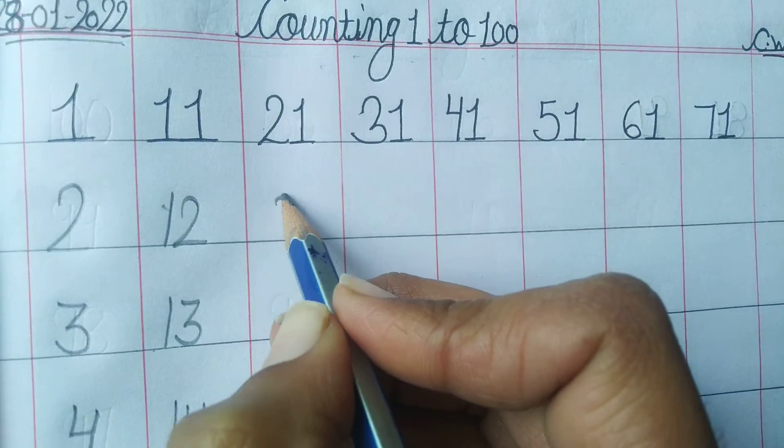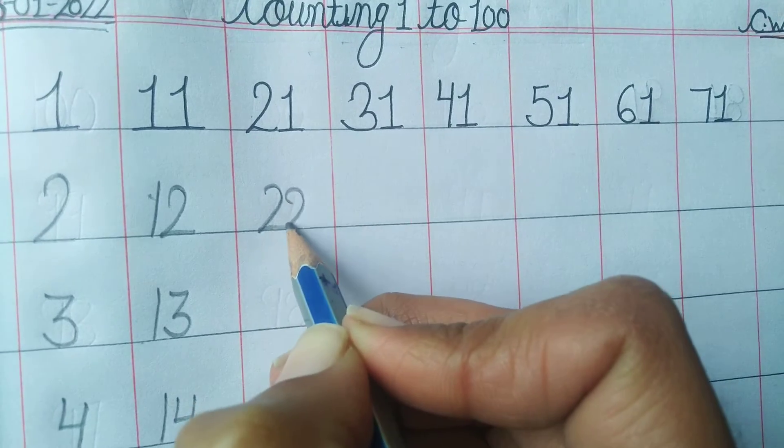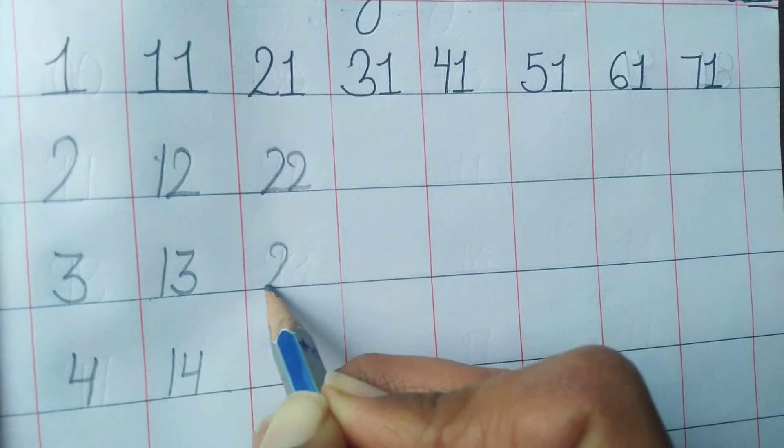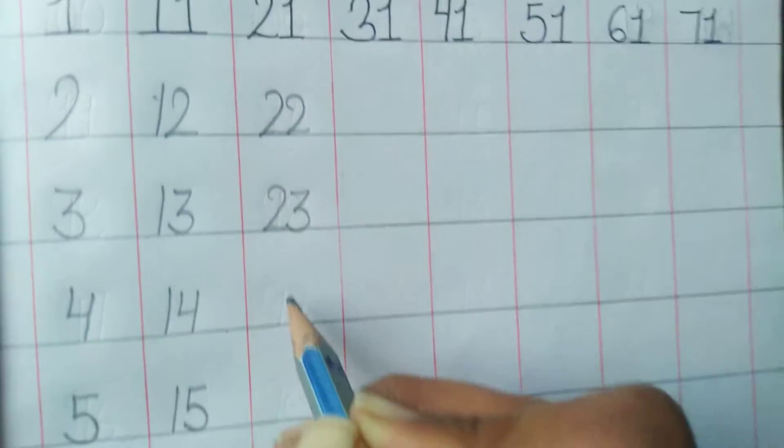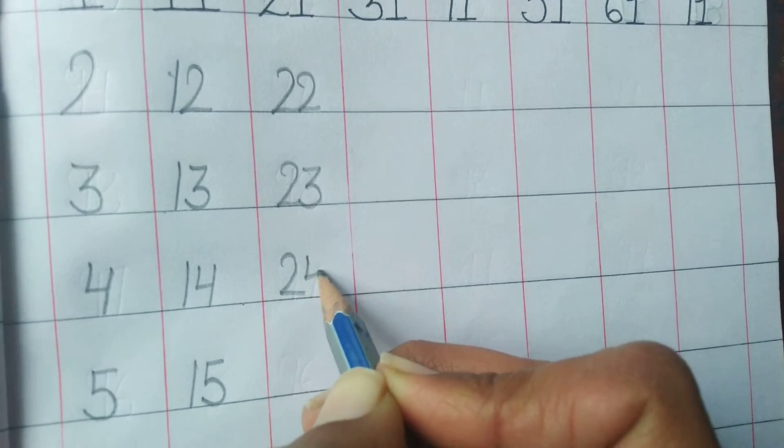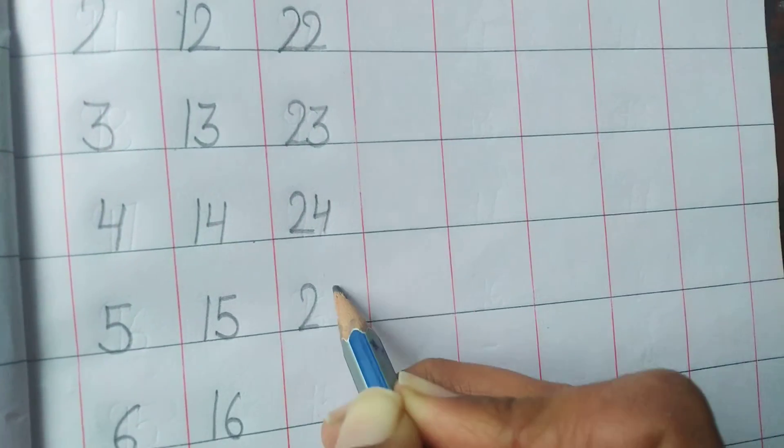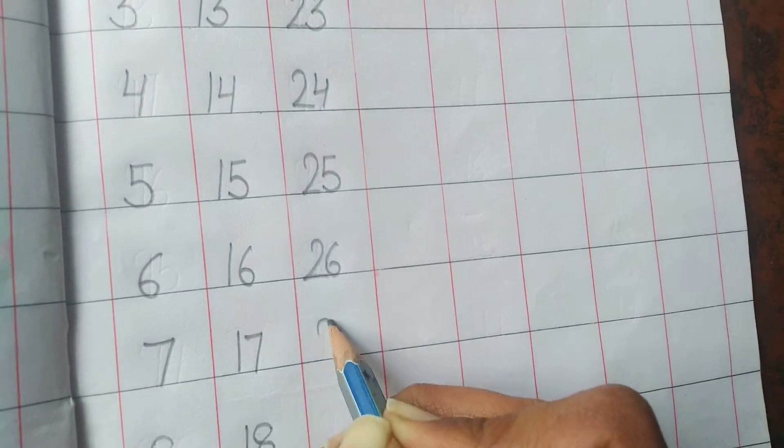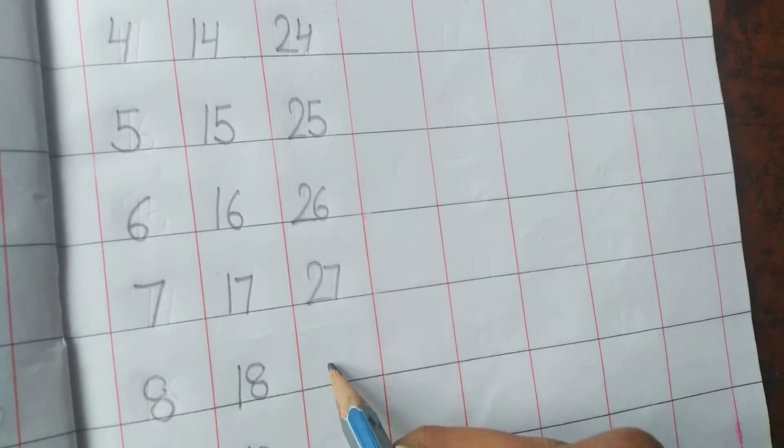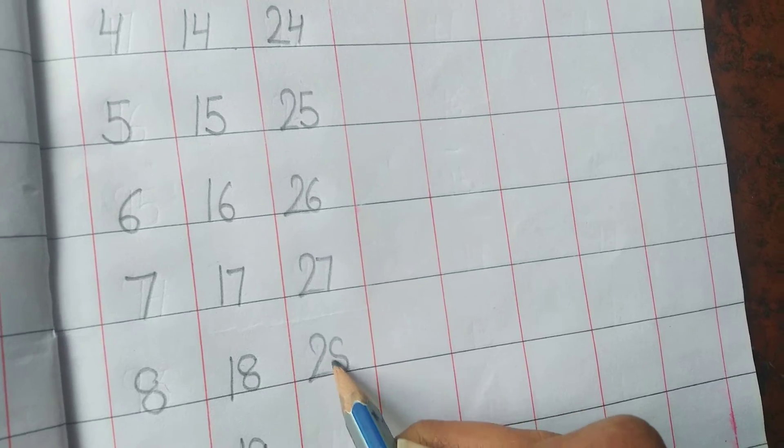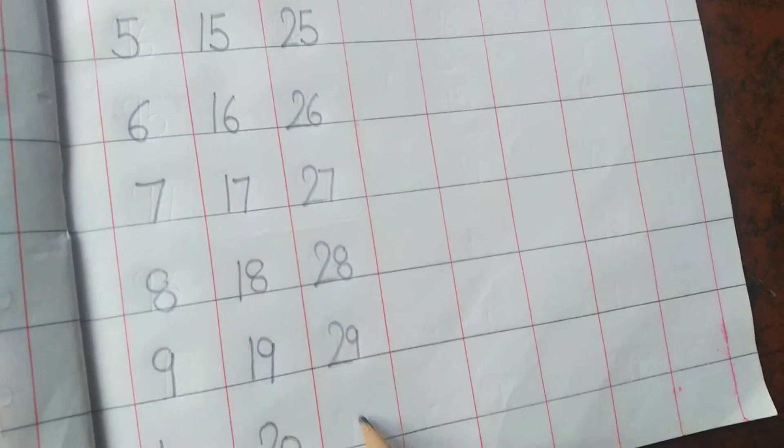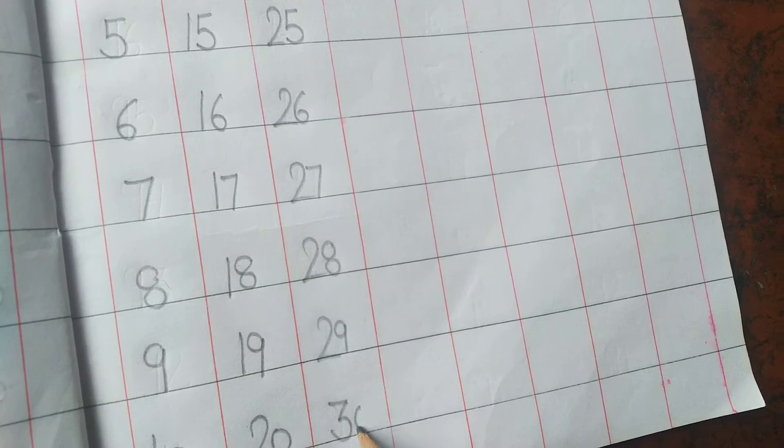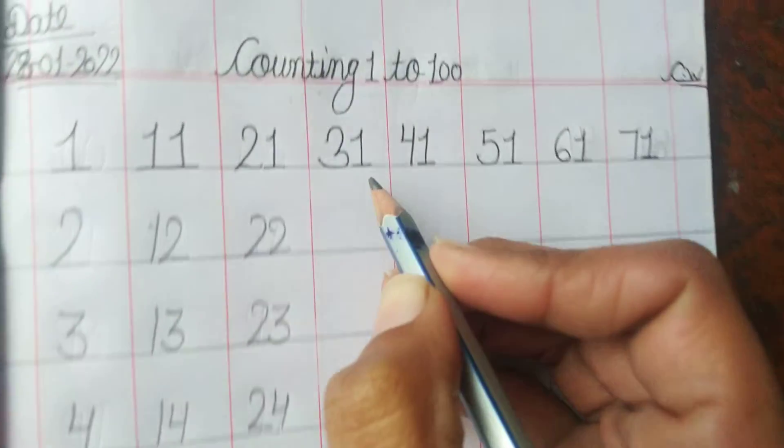21, 22, 23, 24, 25, 26, 27, 28, 29, 30. Next,